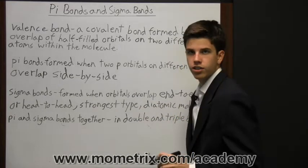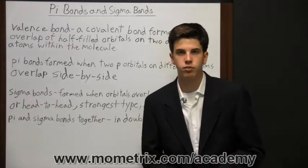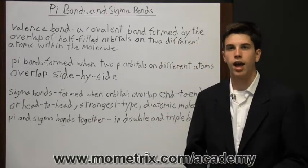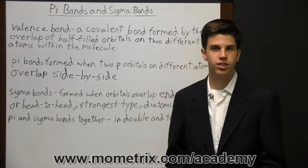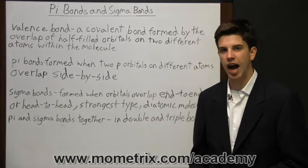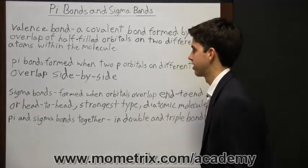And the way that works is that a double bond will have one sigma bond and one pi bond, while a triple bond will have one sigma bond and two pi bonds. And so that's how they coexist.